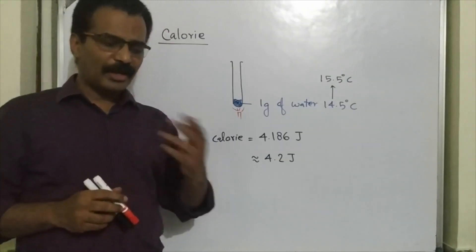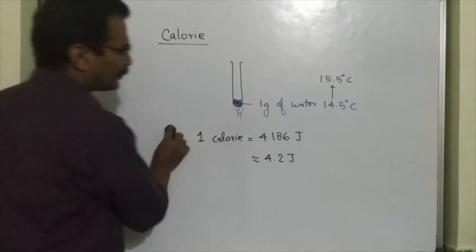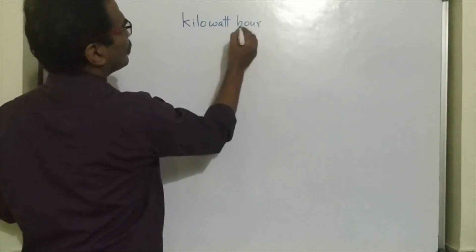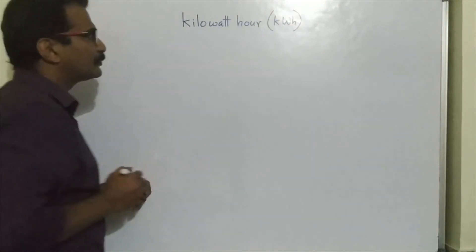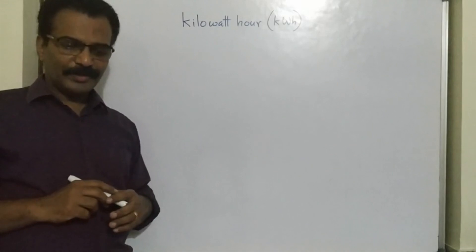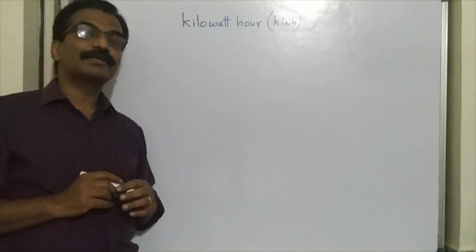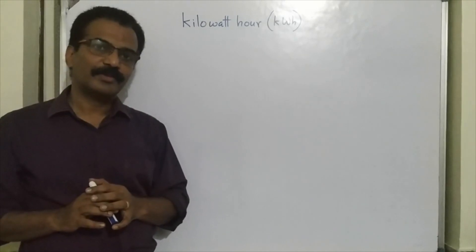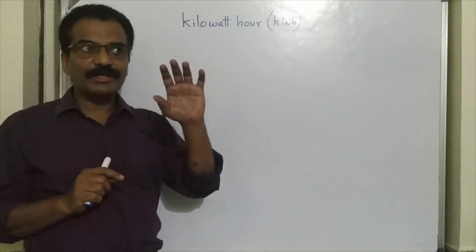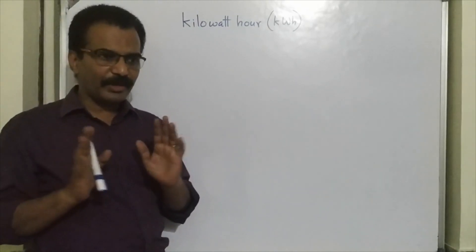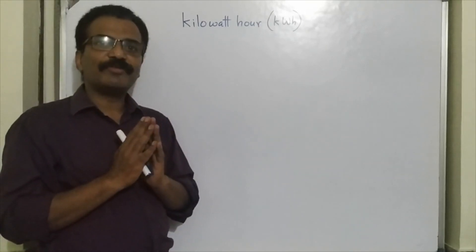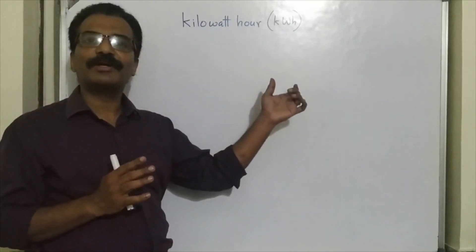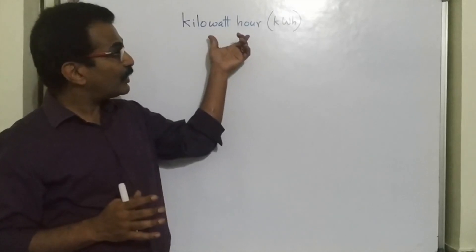Now let us go for another unit of energy: kilowatt-hour. This unit is generally used to measure electrical energy. Kilowatt-hour is the commercial unit of electrical energy. At your home there is an electricity meter which takes readings in this unit. So when you say 500 units of electrical energy is consumed in your home, that means 500 kilowatt-hours of energy is consumed.